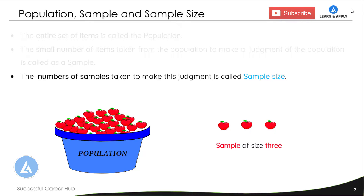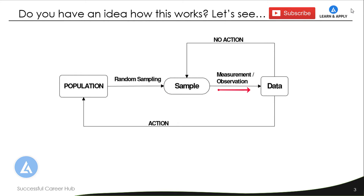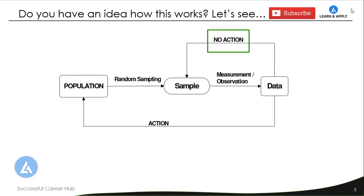To make a judgment about the population, we collect random samples from that population and do some mathematical calculations to see whether it is meeting the acceptance criteria or not. If the sample meets the acceptance criteria, no action is required and we can proceed with the entire data for production or the next step. But if the sample does not meet the acceptance criteria, we need to take actions — either rework, reject, or any subsequent actions as per the control plan. Based on the sample, we take the decision about the population.